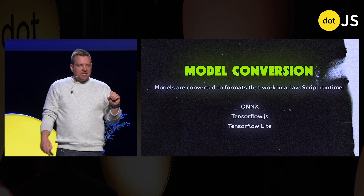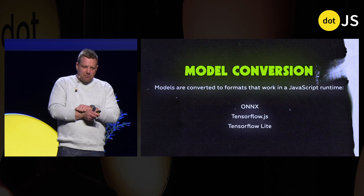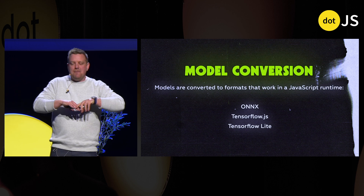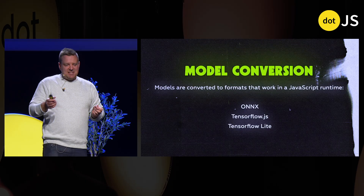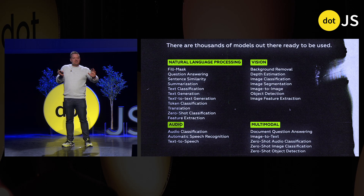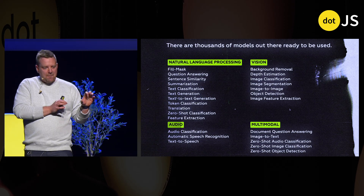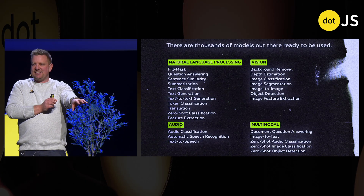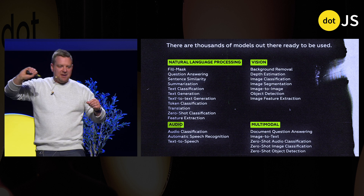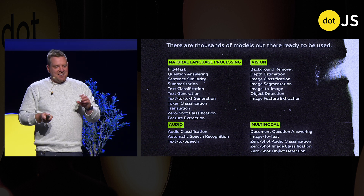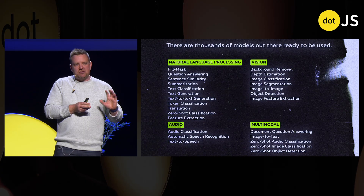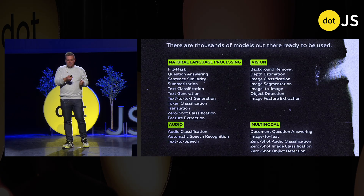Models are converted to formats that work in a JavaScript runtime. ONNX is probably one of the bigger ones right now — it's from Microsoft, and the idea is that they convert models to ONNX and they will run in many runtimes, JavaScript being one of them. TensorFlow and TensorFlow Lite work with MediaPipe as well. There are thousands of models out there ready to be used — go on Hugging Face and your mind will start racing. There are categories across natural language processing, vision, audio, multimodal, and text, and almost all the AI categories you're used to are covered in JavaScript land.